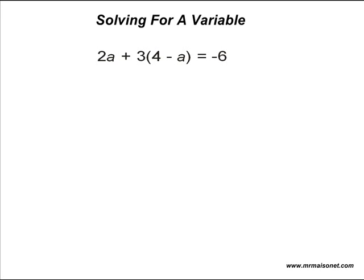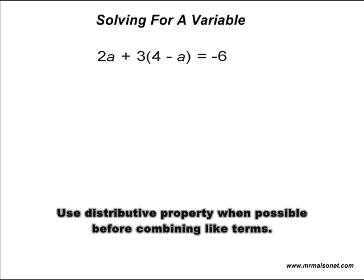In the equation 2 times a plus 3 times the quantity 4 take away a is equal to negative 6, we must isolate the a variable to find its value. In order to do this, we will have to use the distributive property as well as combine like terms. You must always use the distributive property before combining like terms when simplifying your equation.